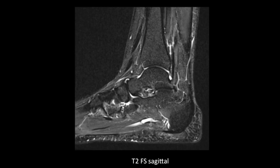We take the T2 fat saturated sagittal images first. Look for bone marrow edema, soft tissue edema, joint effusion, or fluid along the tendon sheath on these images. This will help you to localize the area of abnormality in the ankle joint, and then you can look at the proton density images for the cause of the abnormality.